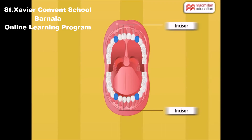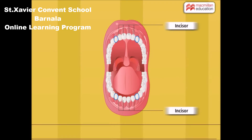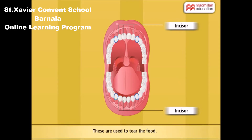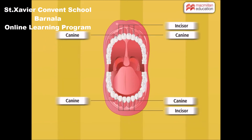Look at the sharp pointed teeth located on both sides of the incisors on each jaw. These are used to tear the food like a fork. They are called canines. They are four in number, two in each jaw.